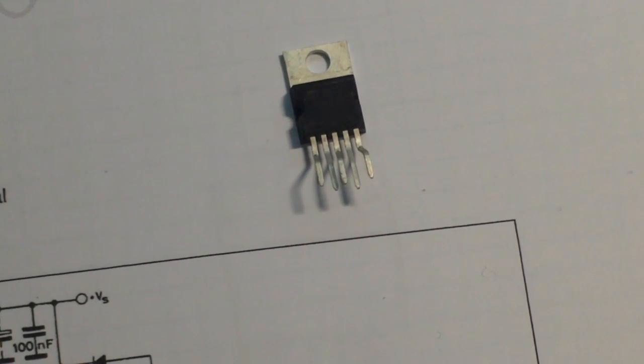If you take the class A and the class B and you kind of put them together, you get a class AB amplifier, which is also known as a push-pull amplifier.